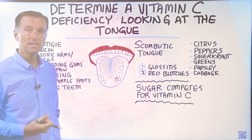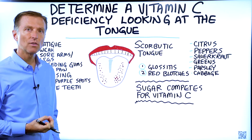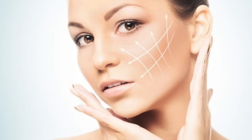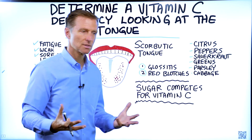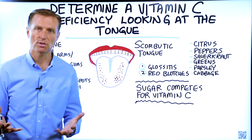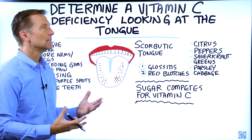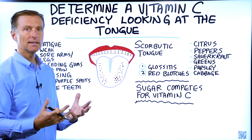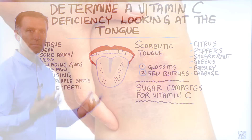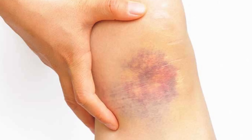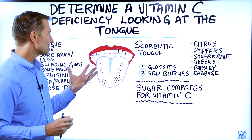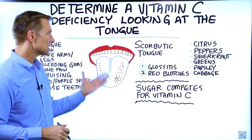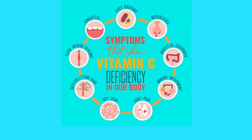The reason for that is vitamin C is intimately involved in making collagen and connective tissue. The inside of your vascular system is all connective tissue. So if you don't have enough vitamin C to make that network, everything falls apart and you start getting little areas of bruising, bleeding, and little red spots and blotches — it can happen in the tongue or anywhere in the body.